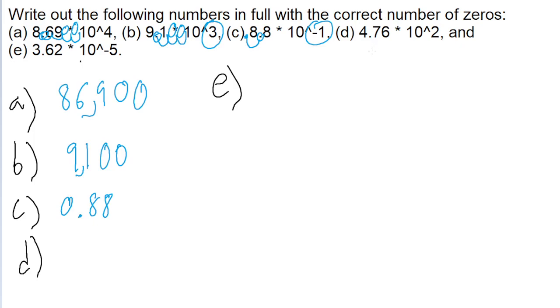Now for part D, we have 4.76 times 10 to the power of positive 2, so we move the decimal point two spaces to the right, so that becomes 476.